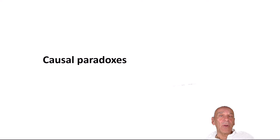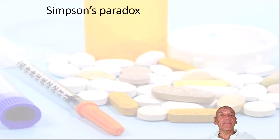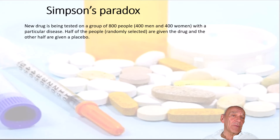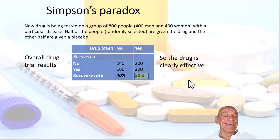Most of the problems arising from learning from observational data are the result of two very common causal paradoxes: Simpson's and Berkson's. We'll start with a simple hypothetical example of Simpson's paradox. Imagine a new drug is being tested on a group of 800 people — 400 men, 400 women — with a particular disease. Half the people, randomly selected, are given the drug and the other half are given a placebo. Overall, 50% of those who got the drug recovered compared to just 40% of those who didn't get the drug. So clearly the drug is effective. Well, is it?